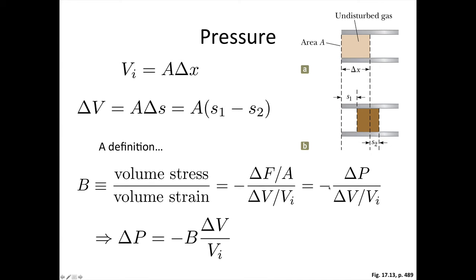So what we're trying to work out is how much the pressure changes. Now rearranging this equation, we've got that our change in pressure is equal to the negative of the bulk modulus times the change in volume divided by the initial volume.